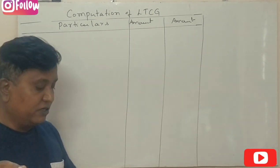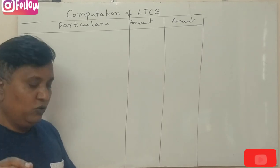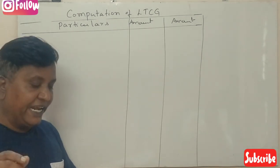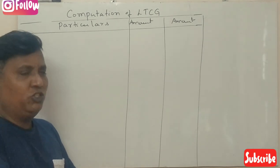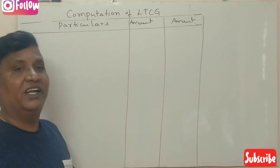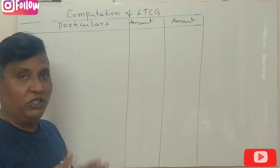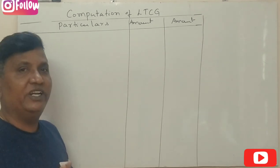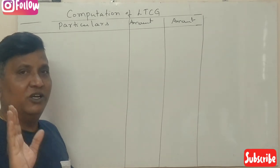The cost of inflation index figures given are: for 2001-02 it is 100, for 2005-06 it is 117, and for 2019-20 it is 289. This is the cost of inflation index data provided for the problem.